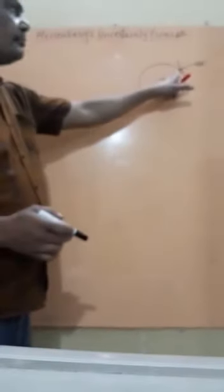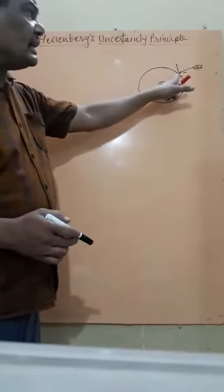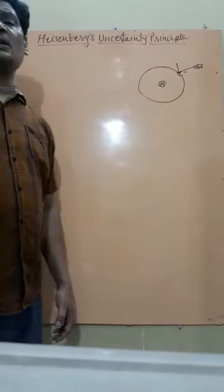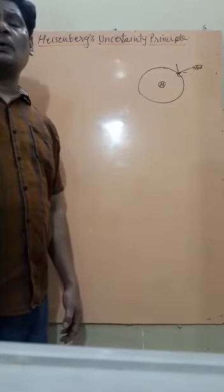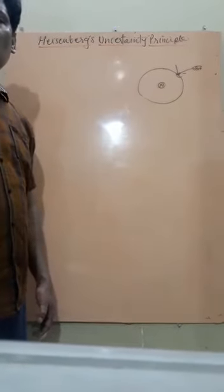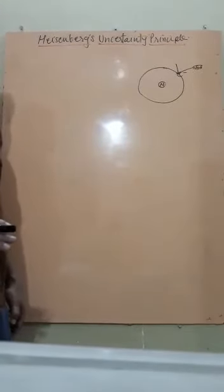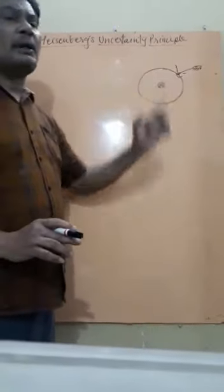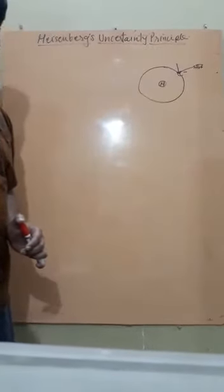But, think about electron. The energy associated with electron is too much less. What is it? Minus 21.8 into 10 to the power minus 19. It is very, very minute energy. That is what? It is a microscopic particle. If it absorbs photon.